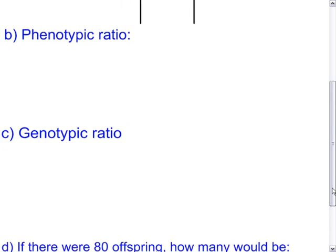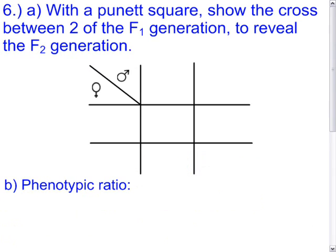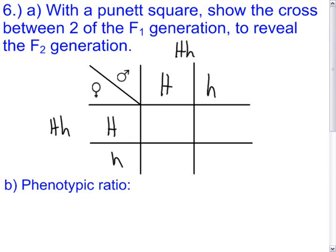Give the phenotypic ratio, the genotypic ratio, and answer: if there were 80 offspring, on average how many would be dicorns, heterozygous, one-and-a-half corns, homozygous recessive, or heterozygous recessive? Pause, answer, then unpause. Both F1 parents have the same genotype — heterozygous (Hh). Their gametes combine like a multiplication table to show the possible F2 offspring.